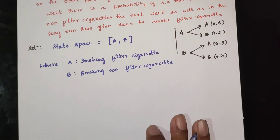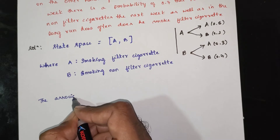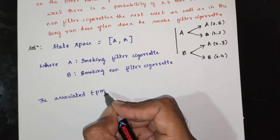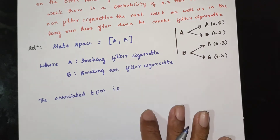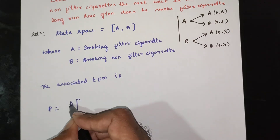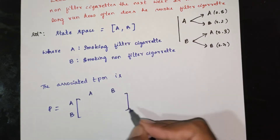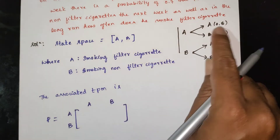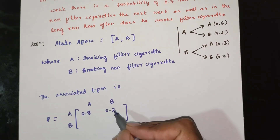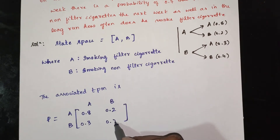The associated transition probability matrix (TPM) is: A to A equals 0.8, A to B equals 0.2, B to A equals 0.3, B to B equals 0.7.